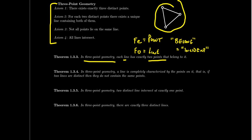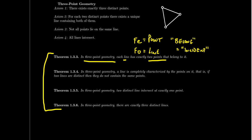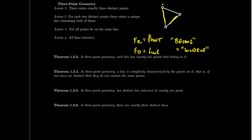I said the theory is complete, but that's only because of these four theorems — from them, we can derive that every model is isomorphic to this one. The second theorem of Fee-Foe, which becomes a theorem of three-point geometry, states that a line is completely characterized by the points on it. That is, if two lines are distinct, then they do not contain the same points. If you look at any two lines in the diagram, they always have different points — no two lines contain the exact same points.